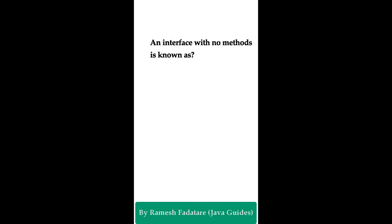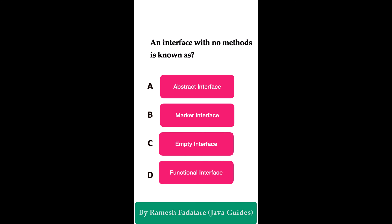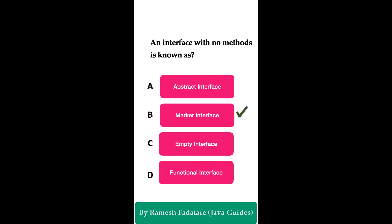An interface with no methods is known as? Option A: abstract interface. Option B: marker interface. Option C: empty interface. Option D: functional interface. The correct answer is marker interface. In Java, an interface with no defined methods is known as a marker interface. It is used to mark classes that support certain capabilities. Remember: an interface with no methods is a marker interface, useful for marking classes that support certain capabilities.